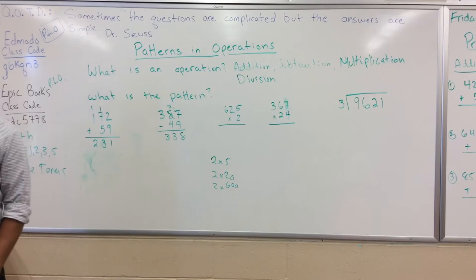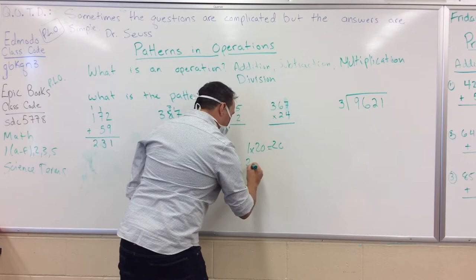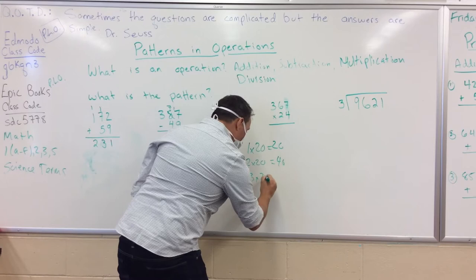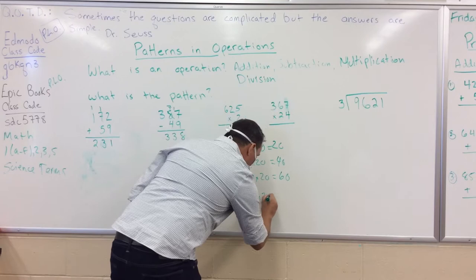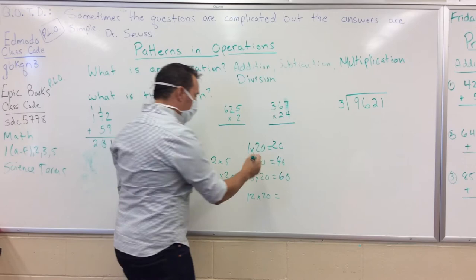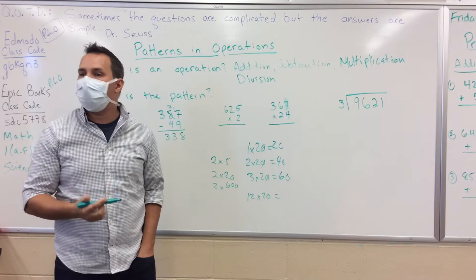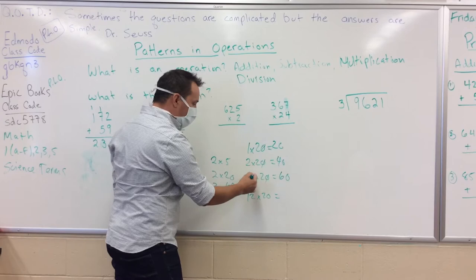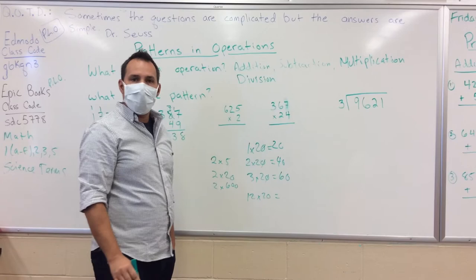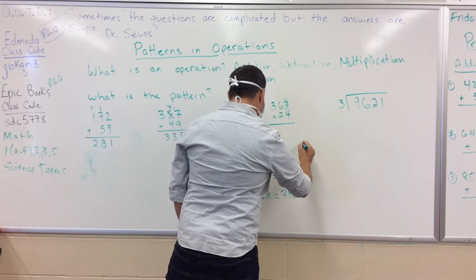There's a really simple trick here. 1 times 20 is 20, 2 times 20 is 40, 3 times 20 is 60. What is 12 times 20? Stop for a minute — there's a pattern. If you take your zero off and add it back later, anytime you're multiplying a number with zeros you can remove them, do the multiplication, then add the zeros back. 1×2=2, add zero back; 2×2=4, add zero back; 12×2=24, add the zero on.